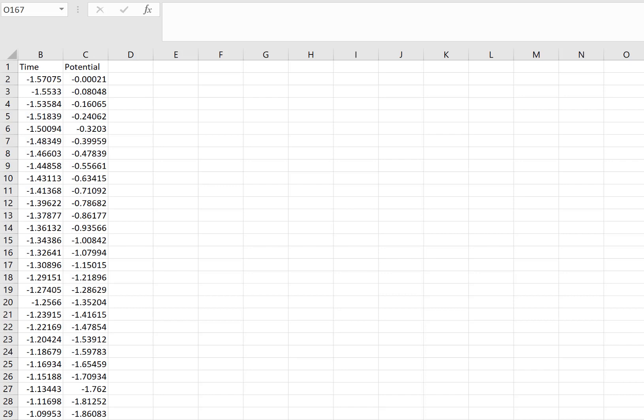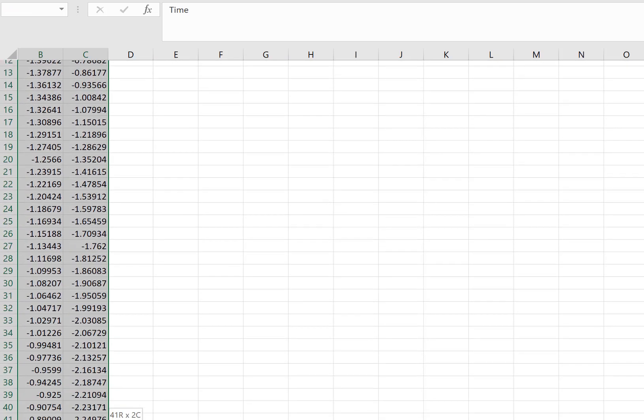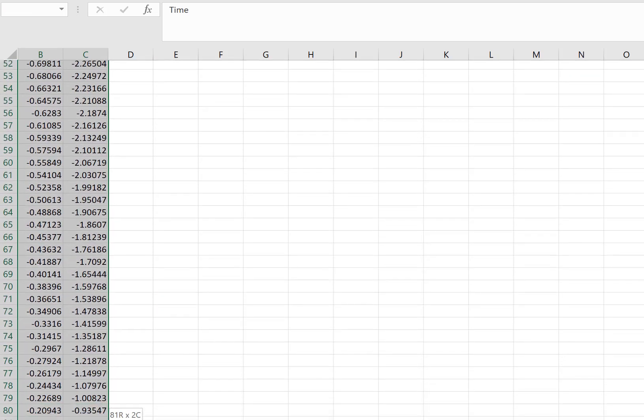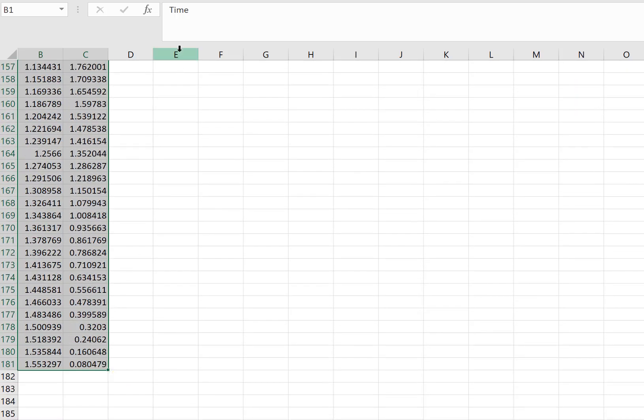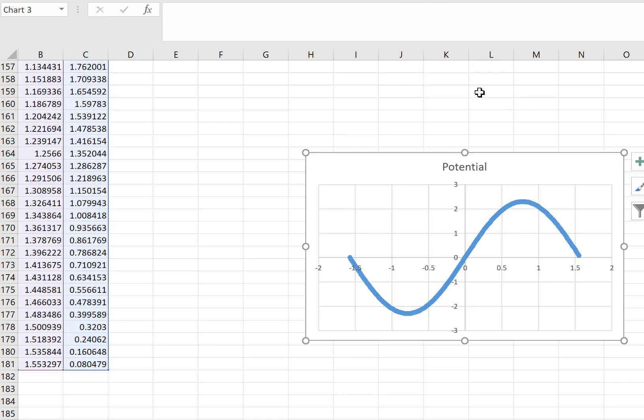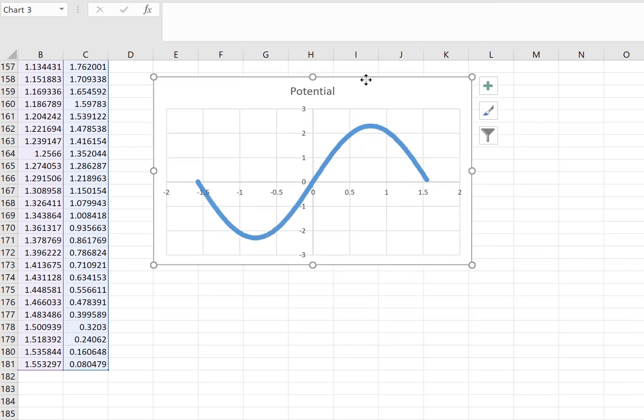First thing I'm going to do is graph this. So I'm going to select the data. I have 180 data points, you have over 2000 I believe, and I'm going to choose insert scatter graph, no lines.